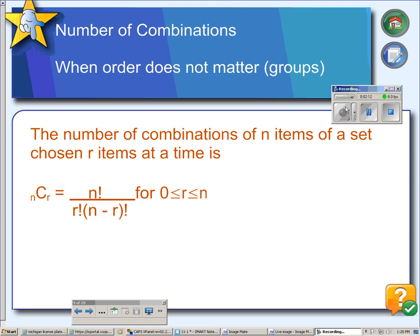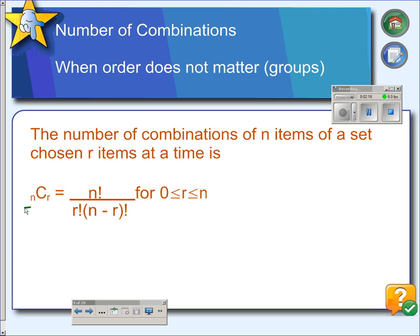You could also calculate a combination. A combination is similar to a permutation. As you can see, the formula is very similar. But the difference is, with a combination, you're taking groups of people instead of putting individuals in order.